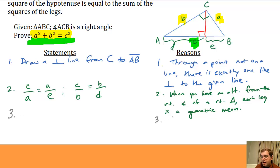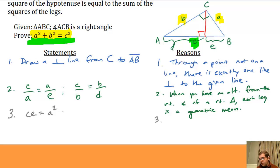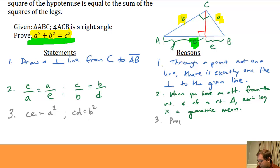Now I've got two proportions, and any time I have a proportion I can cross multiply. So cross multiplying gives: C times E equals A times A, which is A squared. And from the second proportion: C times D equals B times B, which is B squared. The reason we can do this is that cross multiplication is a property of proportions.